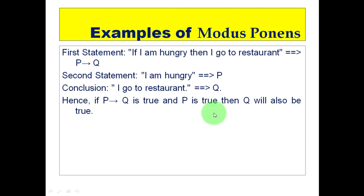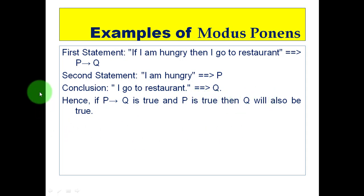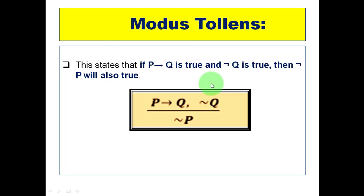For example: first statement — 'If I am hungry then I go to the restaurant' — this is P implies Q, where P is 'I am hungry' and Q is 'I go to the restaurant.' Second statement: 'I am hungry' — that is P. So the conclusion is 'I go to the restaurant,' which is Q. Hence if P implies Q is true and P is true, then Q will also be true.